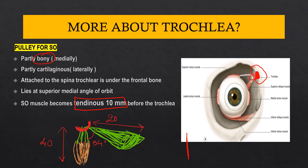The overall length of the muscle is about 60 millimeters: the pre-trochlear part is about 40 millimeters, and the post-trochlear part (after passing through the trochlea) is about 20 millimeters. The angle at which the muscle bends at the trochlea is about 54 degrees.